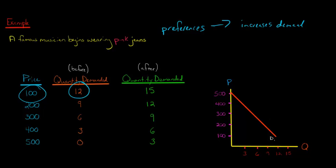So at $100, let's say there are 12 units, or 12 pairs of pink jeans, or 12,000, however you want to think about it. There are 12 demanded at a price of $100.